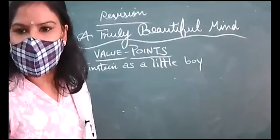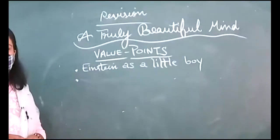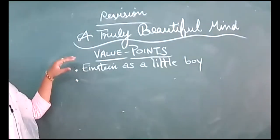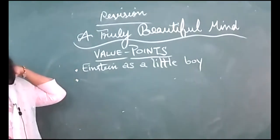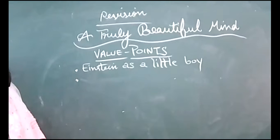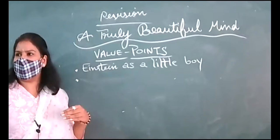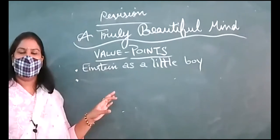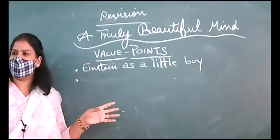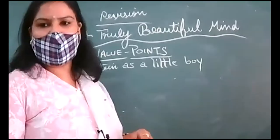Very good morning. We already started this revision of the chapter 'A Truly Beautiful Mind' yesterday, and we discussed Einstein as a little boy in detail. So we will be moving on to the next point. In this chapter we are going to read about Einstein as a little boy, as a human being, and how he became successful later in life. We are going to get glimpses of how a person becomes successful. It's not in one day, two days, or few days—it is a matter of continuous efforts.